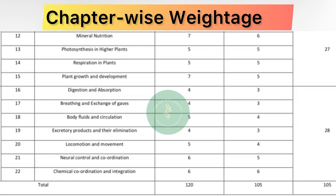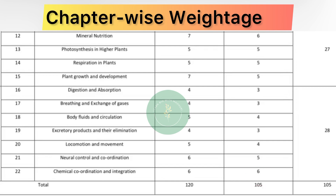Discussing the last unit, unit number 5, which has 7 chapters. Chapter number 16, Digestion and Absorption — 3 marks. Chapter number 17, Breathing and Exchange of Gases — 3 marks. Chapter number 18, Body Fluids and Circulation — 4 marks. Chapter number 19, Excretory Products and Their Elimination — 3 marks. Chapter number 20, Locomotion and Movement — 4 marks. Chapter number 21, Neural Control and Coordination — 5 marks. Chapter number 22, Chemical Coordination and Integration — 6 marks. So the overall weightage from unit number 5, having 7 chapters, will be 28 marks.